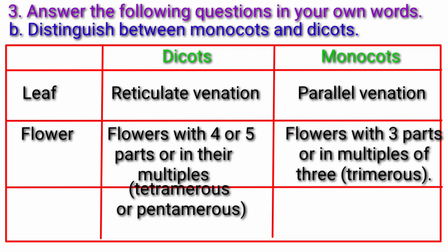Flower — Dicots have flowers with four or five parts or their multiples. Monocots have flowers with three parts or multiples of three.